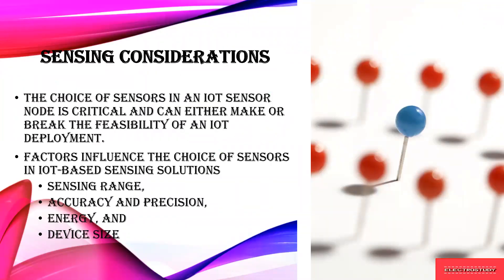When you are choosing a sensor, you have to consider different factors for different applications. It is not that you use only one sensor for every application — that doesn't work. You have to consider many solutions and then select the sensors based on the requirement. Choosing a sensor in an IoT application is actually critical, because the right sensor you choose is best for the deployment. If you choose the wrong sensor, it will break all the feasibility of an IoT deployment. There are some factors you have to consider while selecting sensors.